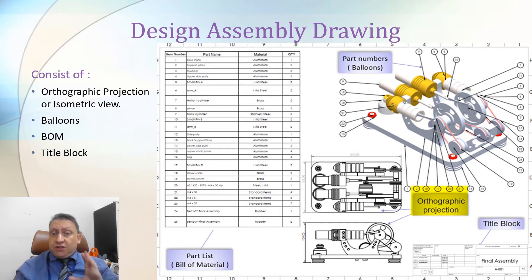So number one, the views. Number two, part numbers or called balloons. As an example, each of these circles with line and arrow is point to a part, point to a piece. Let's say this one, number one, it's point to this one. Where, what is this part?